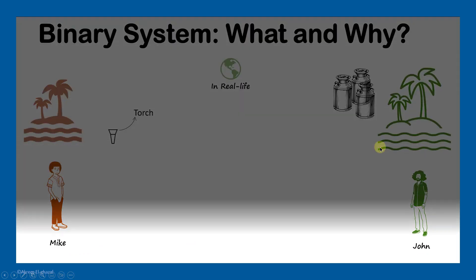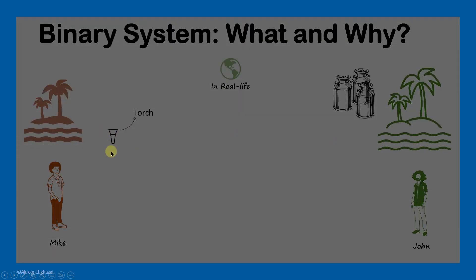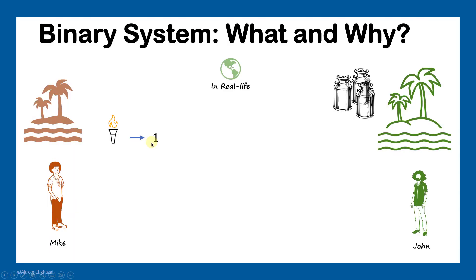Mike asked John to look over from his island at night at the torch. If the torch is off, that means Mike doesn't need any cans of milk. If the torch is on, that means John has to bring one can of milk. If Mike wants two cans, he will make the fire bigger, and if he wants three he will make it even bigger. John was not happy with this idea — why?